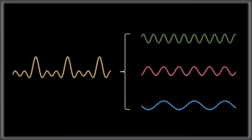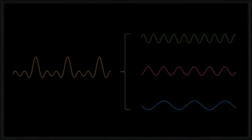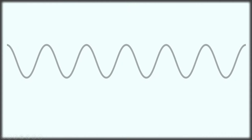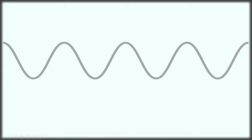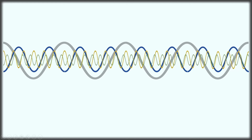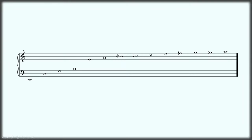Let's see how this works by looking at an example where we start with a sine tone — a sine tone being one without any harmonics — and where we add the partials of the harmonic series in order, one at a time. Listen to how the added overtones colour the sound.